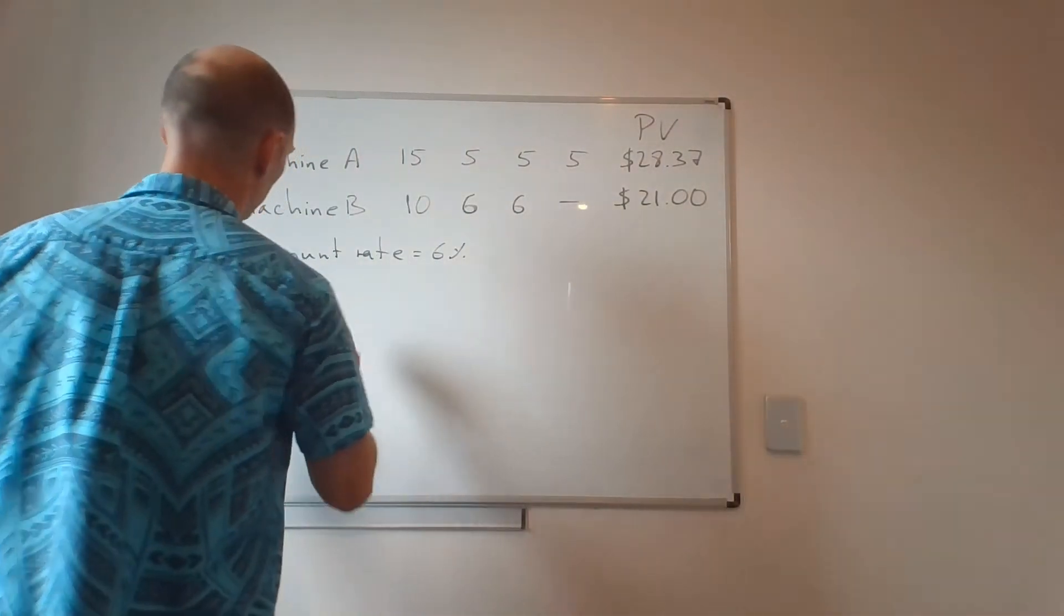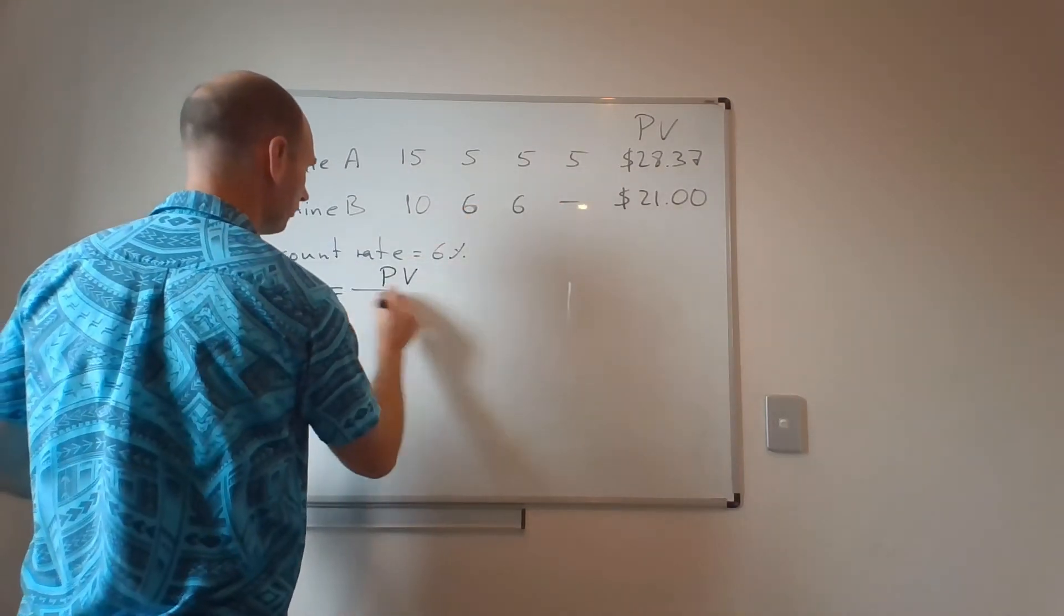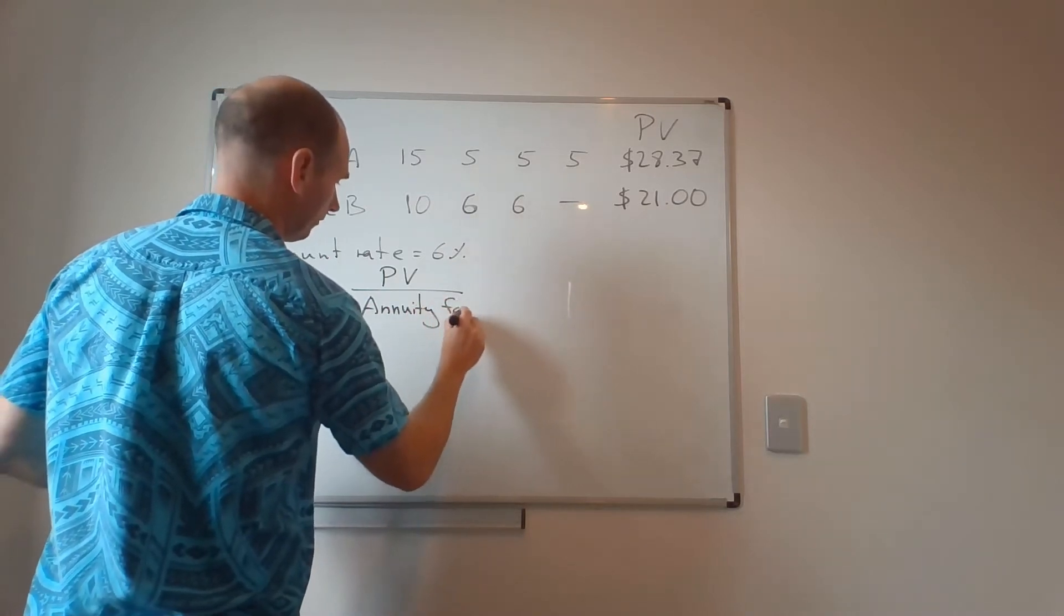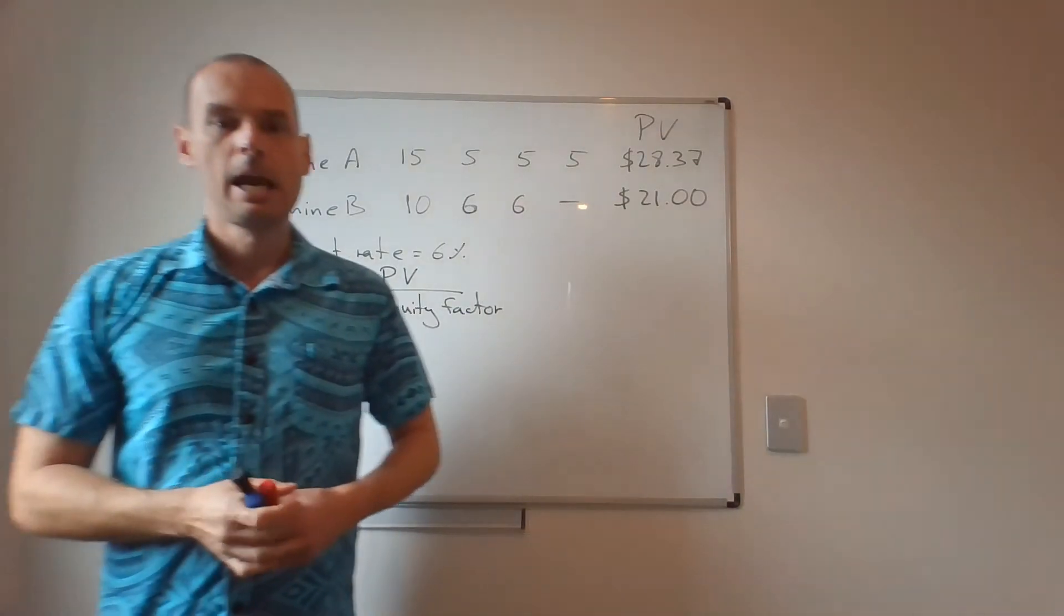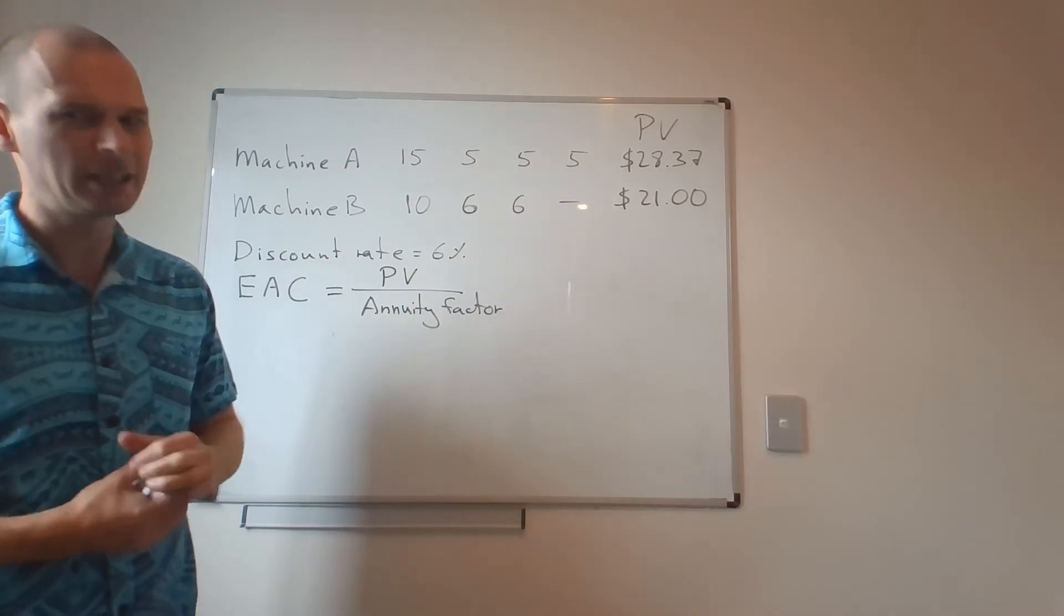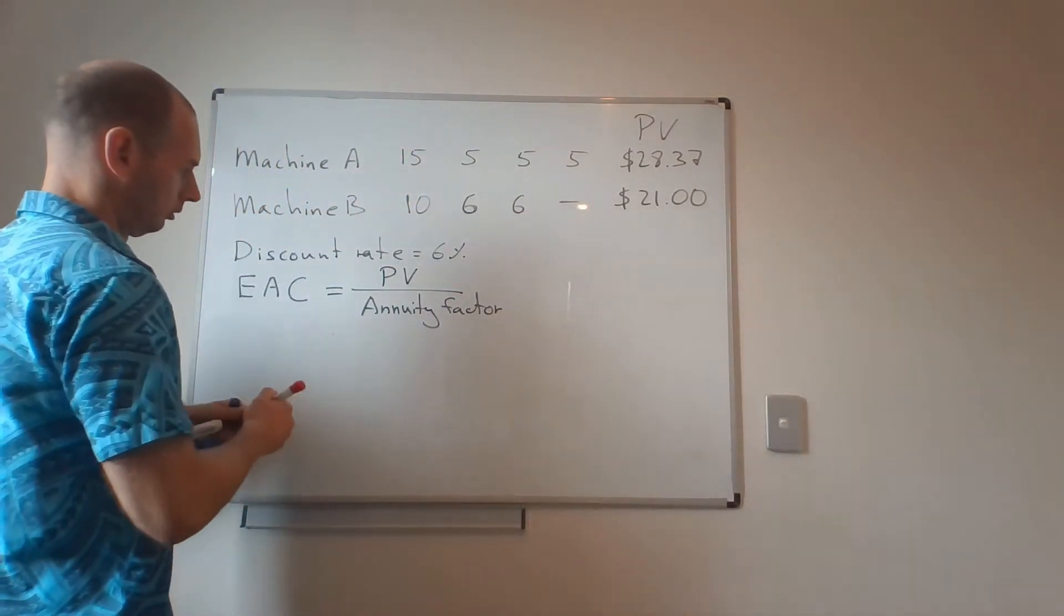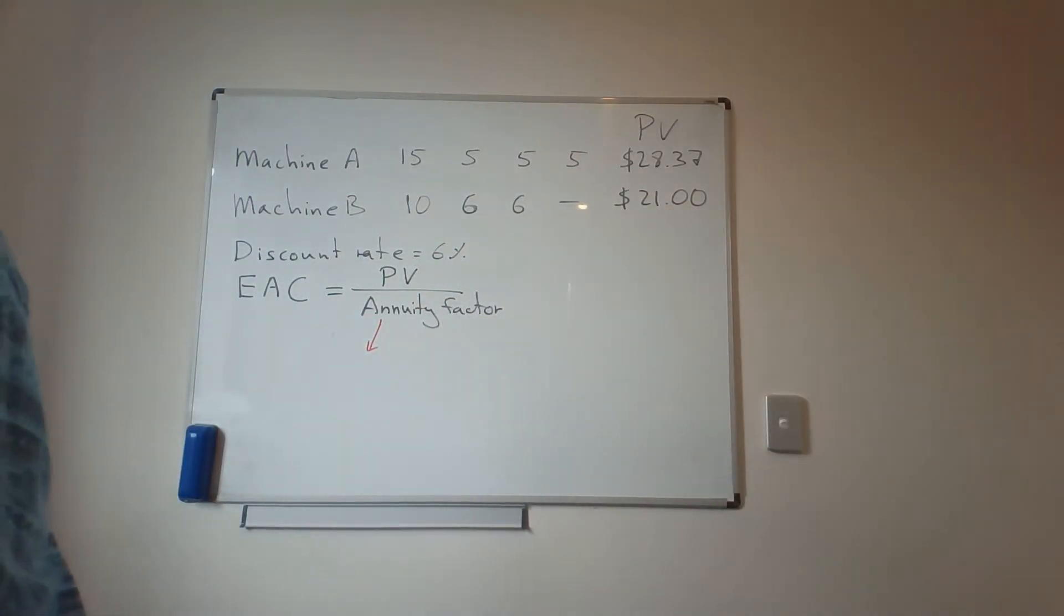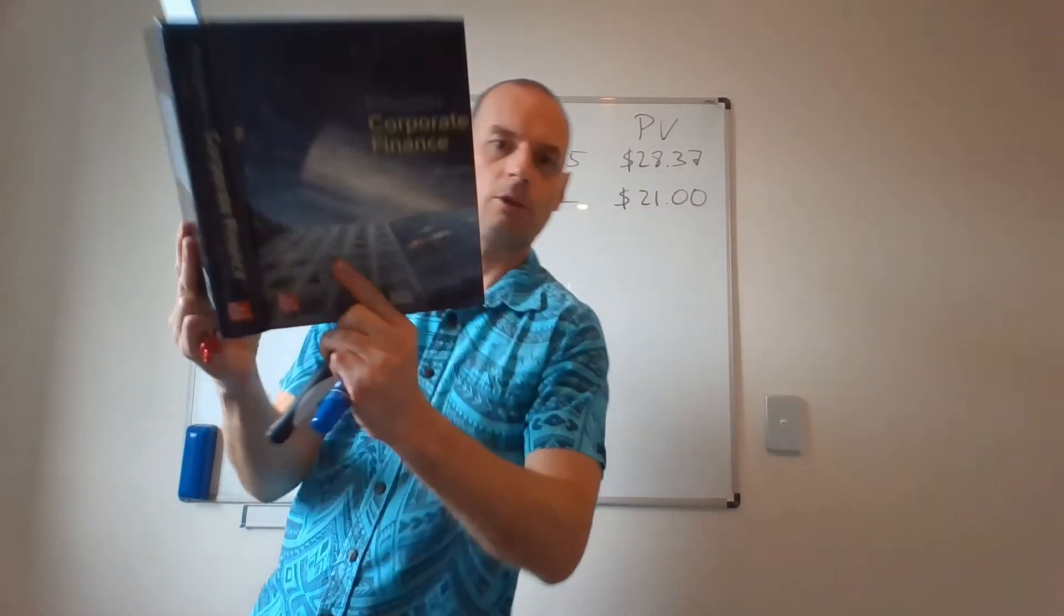What is my equivalent annual cost? It's my present value divided by the annuity factor. And we will be going through this computation in class, because it's quite a convoluted computation. The annuity factor is given to you on page 28 of this textbook, or you can just Google it. Oops, I dropped my dry erase markers.